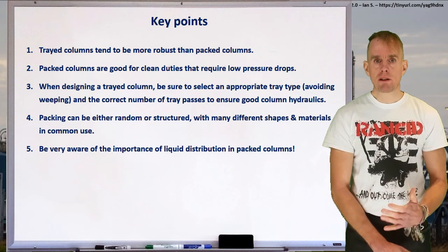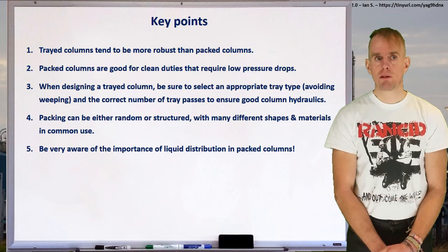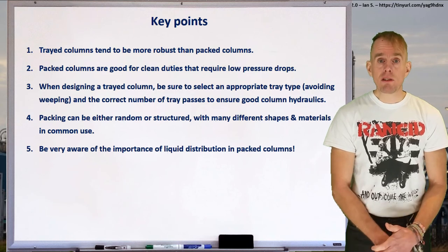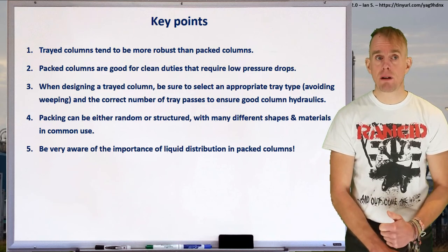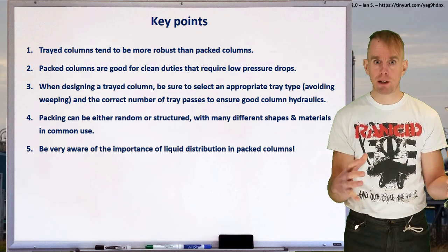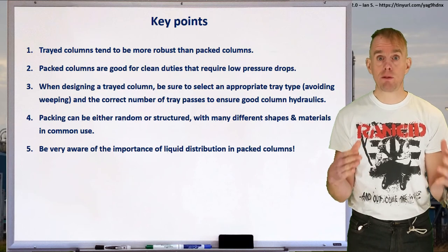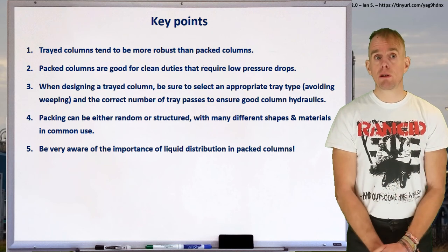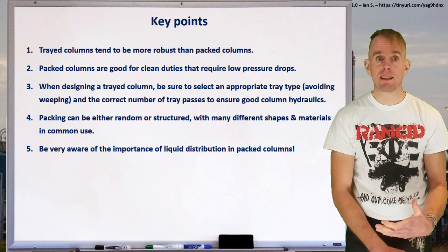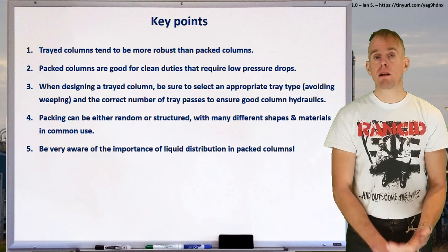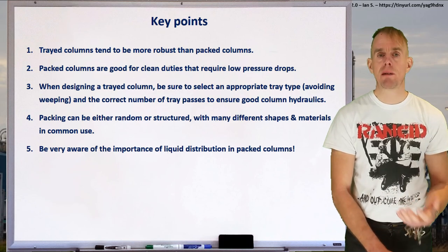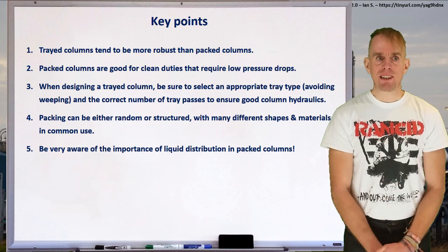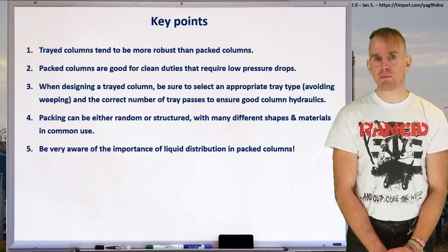To recap the key points: tray columns tend to be more robust than packed columns, but packed columns are very good for clean duties requiring low pressure drops and high throughputs. When designing a tray column, select the appropriate tray type — sieve trays for high vapor flow rates, valve or bubble cap trays for low vapor flow rates — and ensure you have the correct number of tray passes to avoid flooding your downcomers. Packing can be random or structured, in many materials. Be very aware of the importance of good liquid distribution in packed columns.